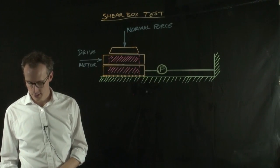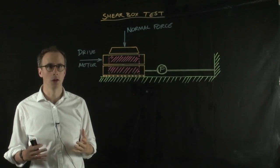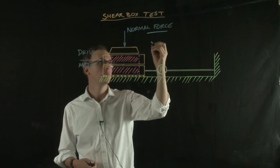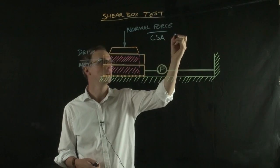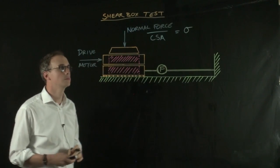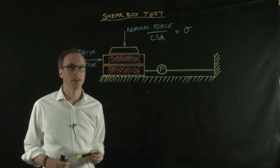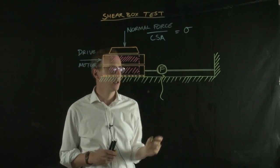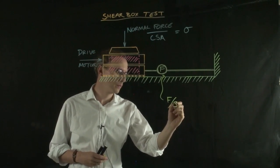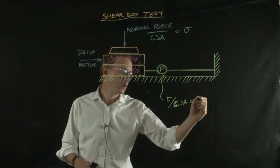If we take that normal force and divide it by the cross-sectional area of the box — which in a standard shear box test is 60 mm by 60 mm, although you can get different sized shear boxes — what that equals is the normal stress. Similarly, if we take the force measured in the force transducer and divide it by the cross-sectional area of the box, what we get is the shear stress going through the sample.